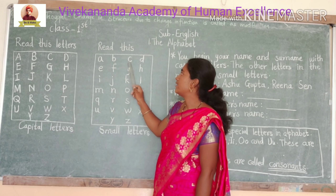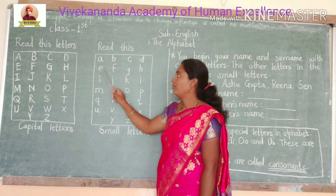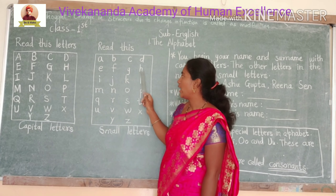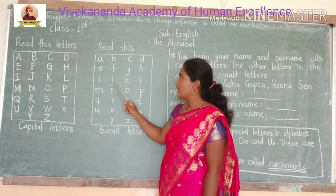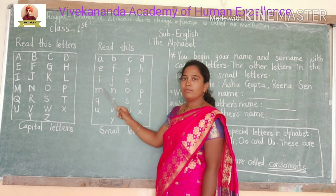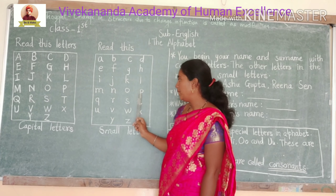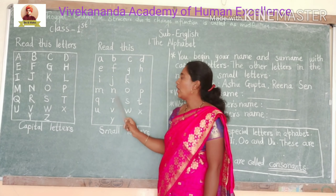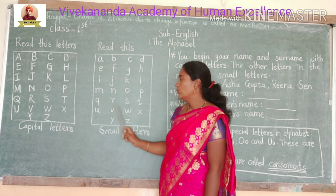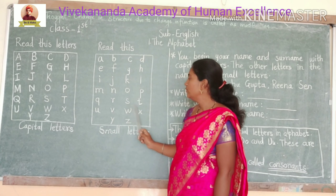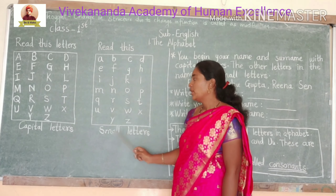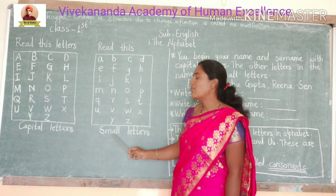A, B, C, D, E, F, G, H, I, J, K, L, M, N, O, P, Q, R, S, T, U, V, W, X, Y and Z. These are called small letters.